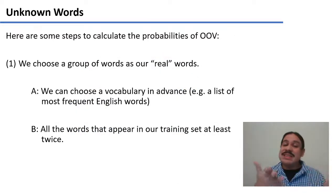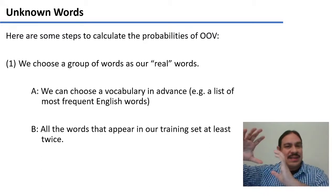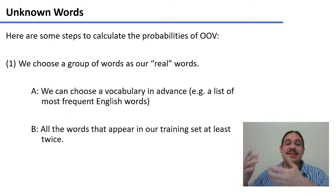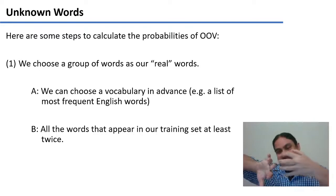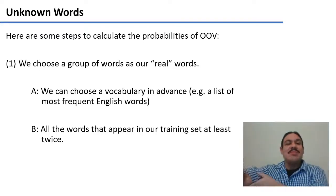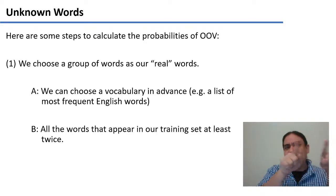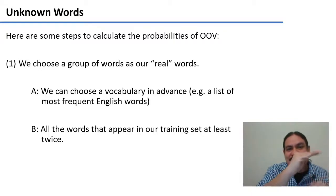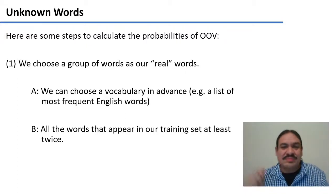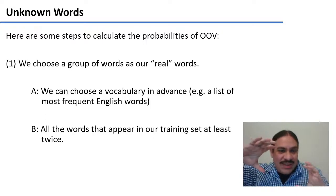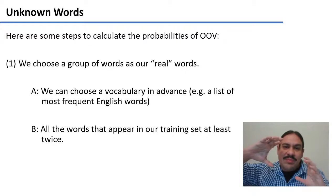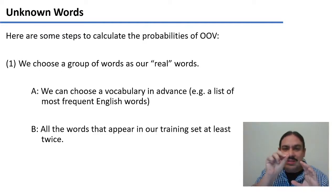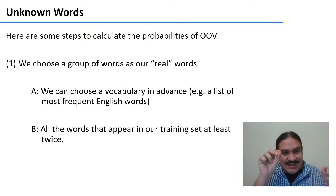There are several ways to handle this. When we have our training set, we choose some words to be the 'real' words — the ones we will use. One approach is to have a vocabulary in advance, like a list of frequent words in English, and then call all words that appear both in our training set and in the preset vocabulary 'real words.' We can also do it internally: we calculate if words appear more than once. Most words will appear more than once, but a few will appear only once. We call the ones appearing more than once 'real' and those appearing only once the 'unknown' or out-of-vocabulary words.